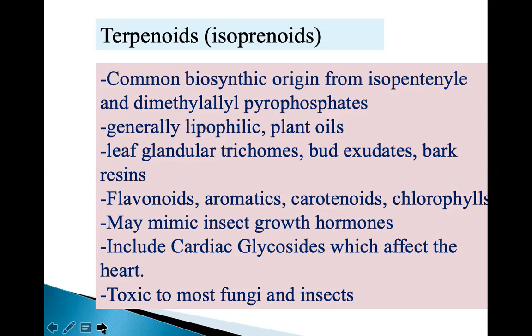Terpenoids mimic insect growth hormones. Some Terpenoids include cardiac glycosides which affect the heart of insects and other organisms, and they are basically toxic to most fungi and insects. This is why they have medicinal principle — physiologically they are active.